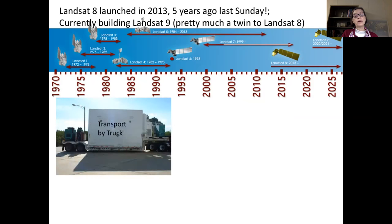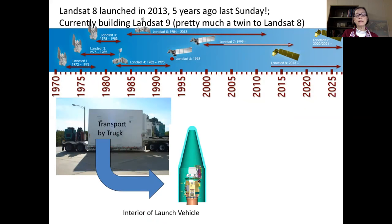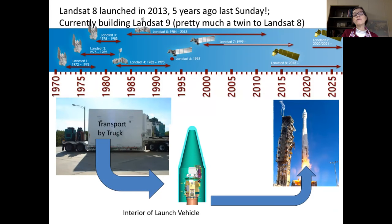We are currently building Landsat 9. We did build Landsat 8 — also built in Arizona. Those two are like very close twins to each other, not quite identical. Landsat 9 is being launched on a Delta rocket. Five years ago last Sunday — February 11 — we launched Landsat 8. So it has met its mission specification of five years. But like a good Landsat, it's just going to keep going and going and going. At least that's our prayer.